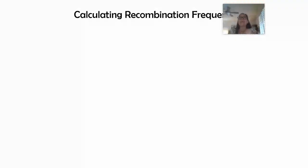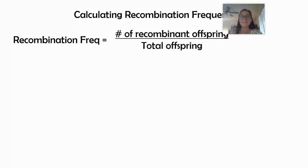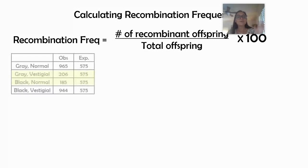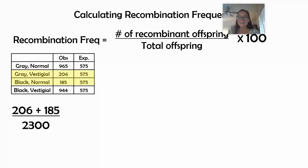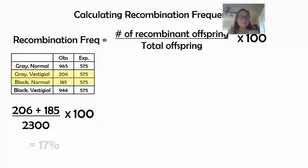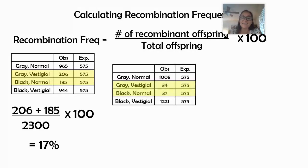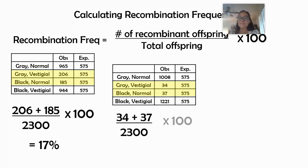If the numbers of recombinant offspring are large, that tells us the genes are far apart and crossing over happens a lot. If the numbers are small, the two genes must be very close together and crossing over rarely separates them. We can calculate this — it's called recombination frequency. To calculate it, take the number of recombinant offspring divided by the total, times 100. In our first example, we take 206 plus 195 divided by the total offspring, which gives us 17% — crossing over happens 17% of the time.